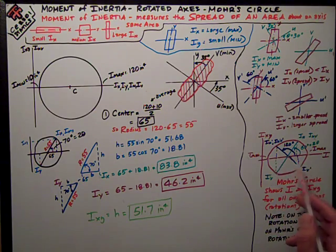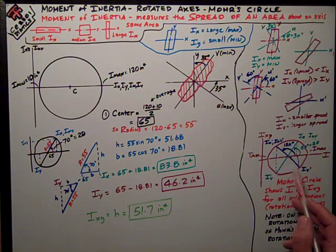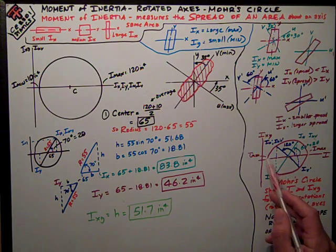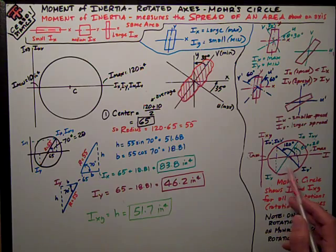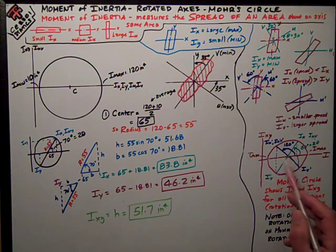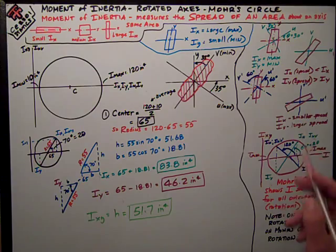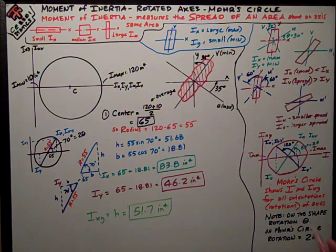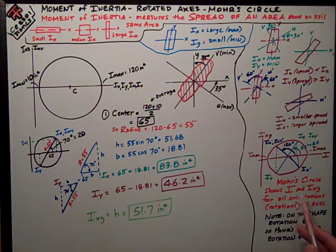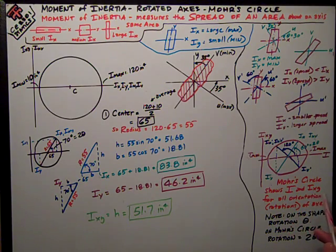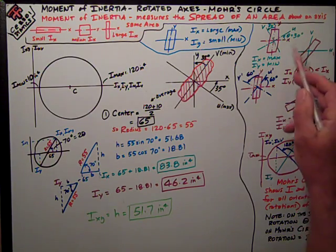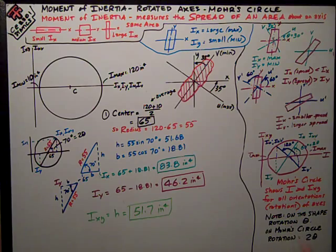And if I keep going, you can see if I go 90 degrees, what was imin, will now become imax at 180 degrees on Mohr's circle or 90 degrees on the real element. And that's what I started at. So, in summary, Mohr's circle shows i and ixy, or moment of inertia and product of inertia, for all orientations or rotations of axes. And very important to note, on the shape, we rotate an angle theta. On Mohr's circle, we rotate two times that angle.